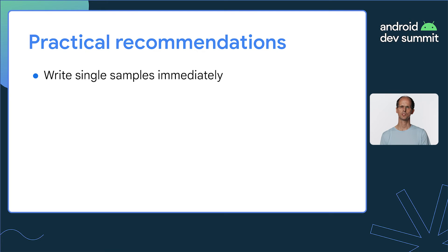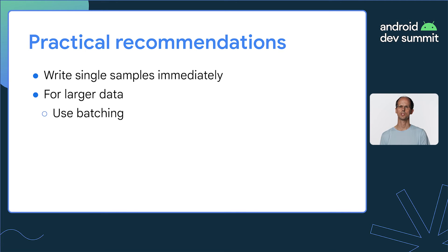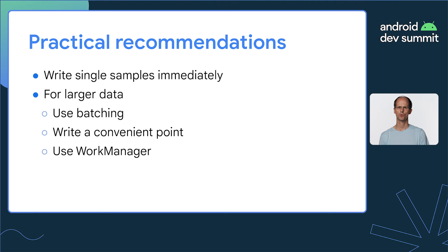So that's how to feed data to HealthConnect. Here are some practical considerations to ensure your integration works smoothly. For simple measurements like a weight measurement or a blood pressure measurement, write the value immediately. For larger sets of data — for example, all the data from a long workout — batch the data up, around a thousand records at a time, and write at a convenient point such as at the end of the workout. Also, use WorkManager to implement a robust means for writing the data. Finally, be sure to handle errors. If there is an error, adopt a retry policy, but ensure that your app can move past this point if the failure continues.